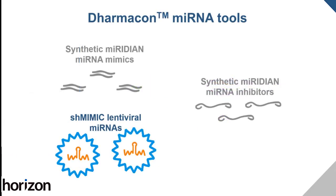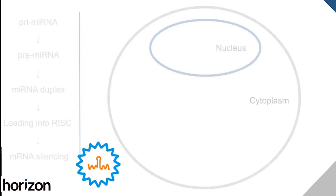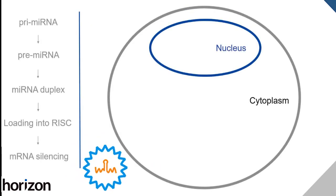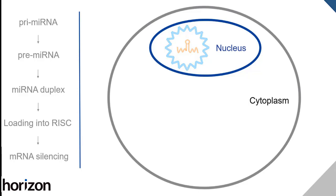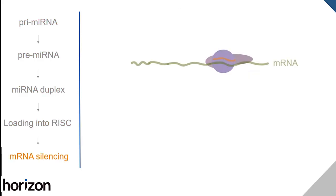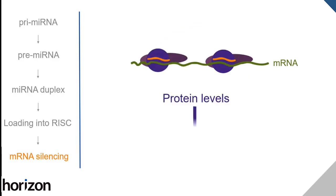Shmimic lentiviral microRNAs contain a proprietary scaffold in which the mature microRNA sequence is embedded, allowing you to choose either the 3p or the 5p strand. Shmimics are delivered as lentiviral particles so that the encoded microRNA is stably integrated into the genome. Shmimic microRNAs are then transcribed and processed through the endogenous microRNA pathway, targeting mRNA and decreasing the transcripts available, which decreases protein levels.